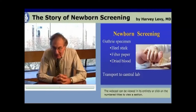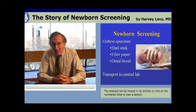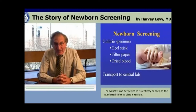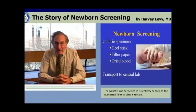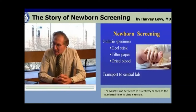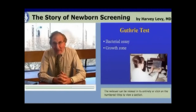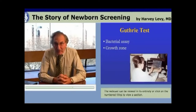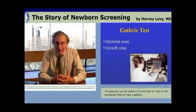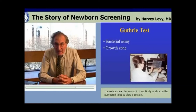The answer Bob Guthrie came up with was the Guthrie test, consisting of two parts. The first was the bacterial assay. The second — probably even more important — was the development of a simple filter paper dried blood specimen that could be obtained from the heel of every newborn, easily transported to a central laboratory, and tested for phenylalanine and PKU. The Guthrie phenylalanine assay was simple enough to be done in not terribly sophisticated laboratories and allowed for a semi-quantitative measurement of phenylalanine.